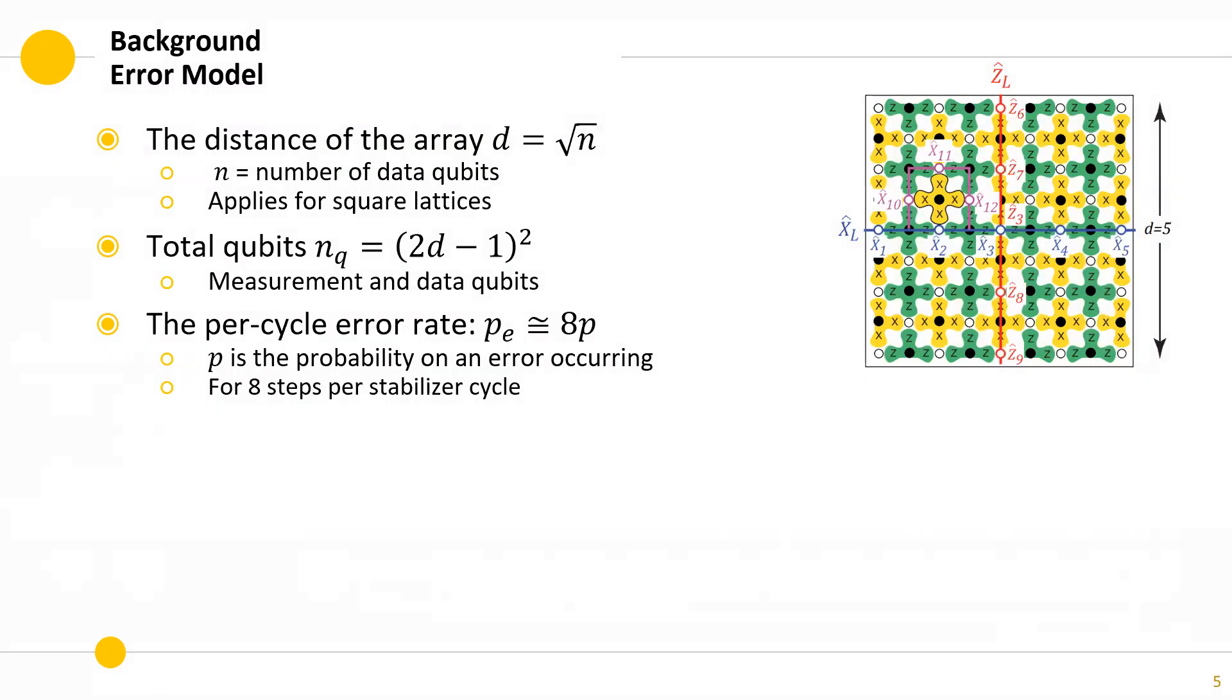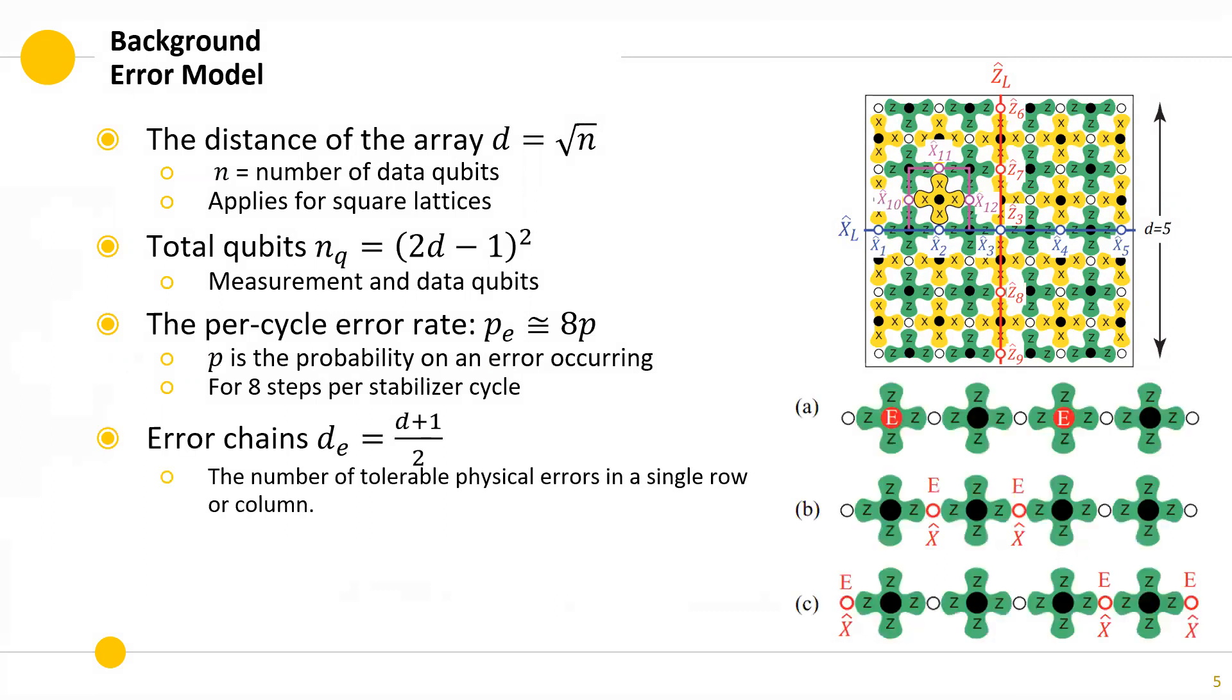There are some important parameters that we have to define before going forward. The distance of the array, which is another representation for the number of data qubits. nQ, which is the total number of qubits used. The per cycle error rate, which is eight times the physical error rate since the stabilizer process does eight steps per cycle. DE is the number of errors on a single chain that cannot be corrected, which would result in a logical error.